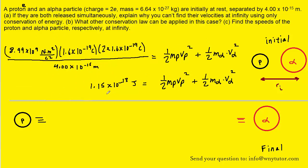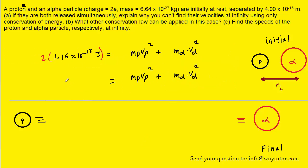We end up with 1.15 times 10 to the minus 13 joules. The unit is joules because coulombs squared cancels, and newtons times meters gives joules. We then multiply both sides of the equation by 2, which cancels the one-half factors, giving us 2.30 times 10 to the negative 13 joules on the left-hand side.